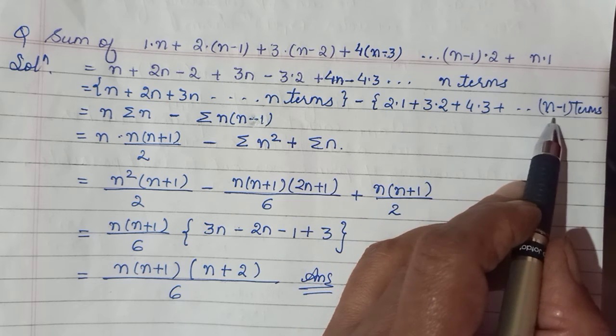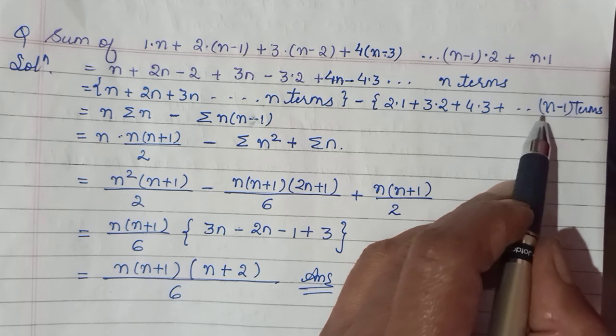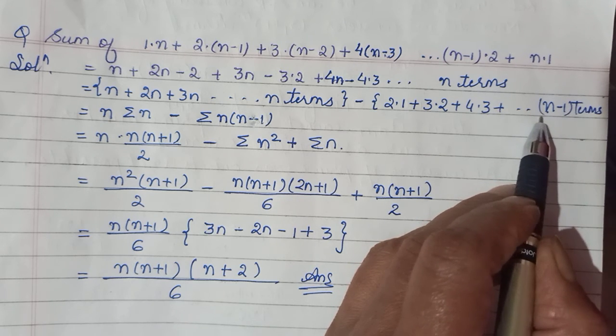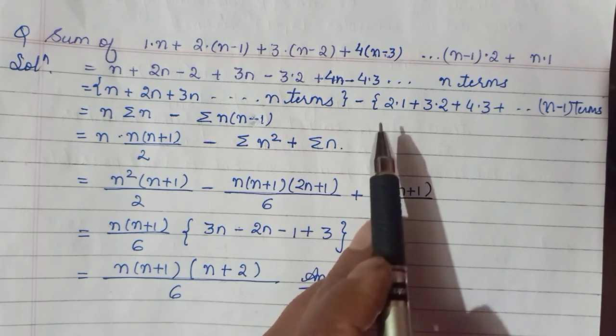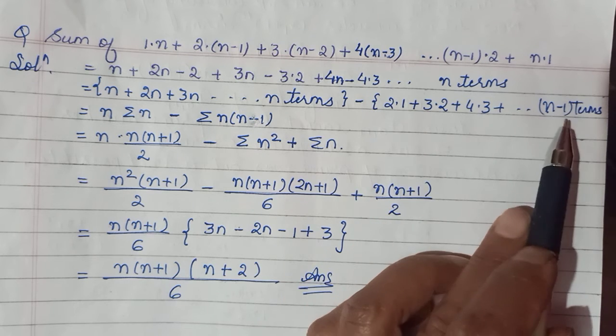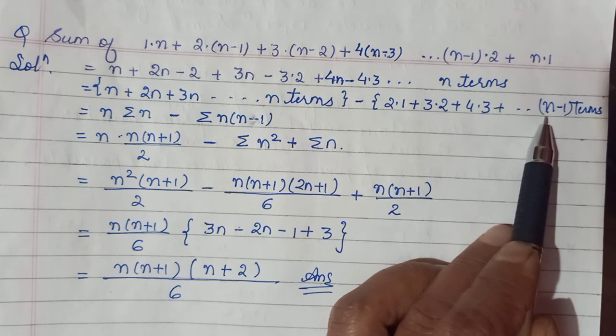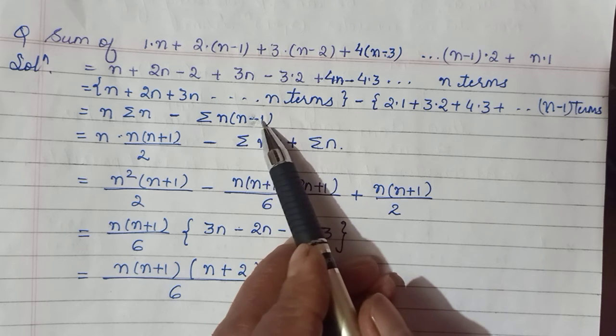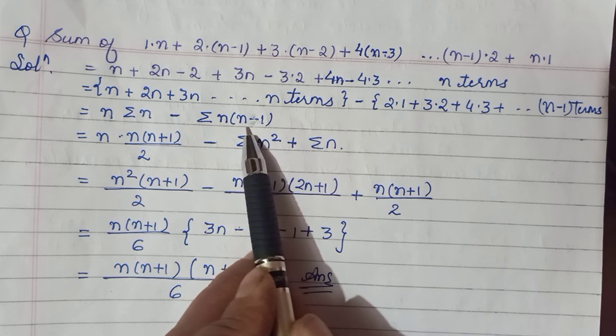So if you see 1, 2, 3... n-1 tak ja raha hai. Then +1 + 1 + 1... Toh is sequence ka agar mujhe sum karna hai, toh as it goes, that sum of any sequence is putting its nth term to sigma notation. Toh iska nth term: ye aapka n chal raha hai aur ye less chal raha hai. You understand, humne bhola tha n-1 terms. 1, 2, 3 will go up to n-1, and the one before that is 1 more than that. So n-1 + 1 makes it n. Toh iska nth term aayega hamara n·(n-1).